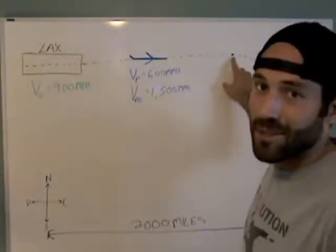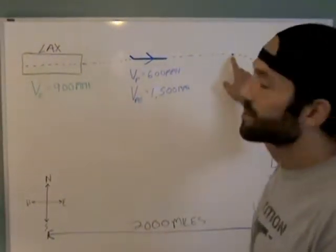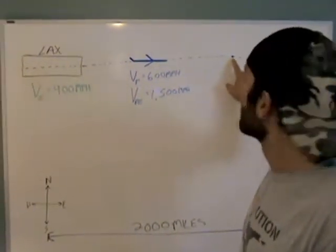So it's going to slow down before it makes the turn, but it's not going to zero. So let's say it slows down to 300 miles per hour.